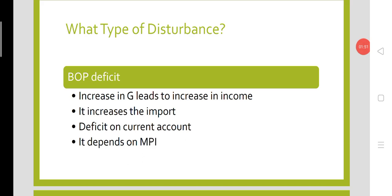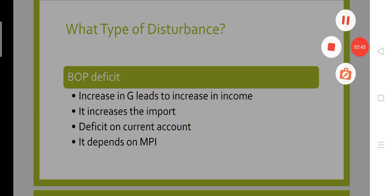An increase or decrease in government expenditure would create some disturbance in the BOP's of a country. An increase in government expenditure leads to an increase in income of the domestic economy, which will increase the import of the nation and create some burden — a deficit on the current account as imports exceed exports. It depends on the marginal propensity to import, but as income increases, imports will also increase. This is the deficit impact of an increase in government expenditure on the current account.